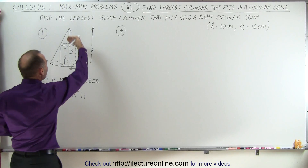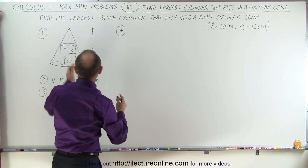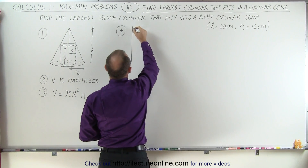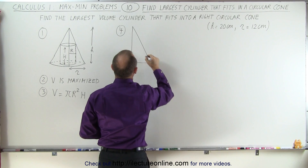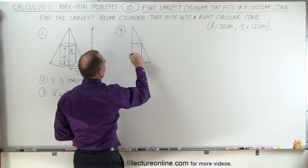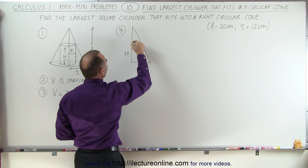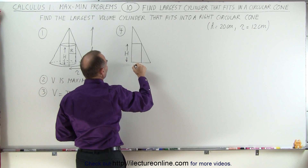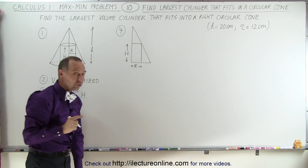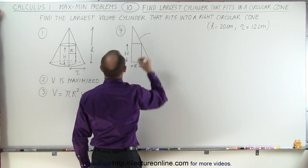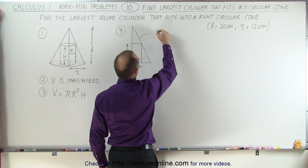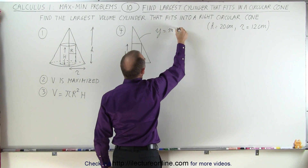If we take a cross section and look at just the right side of it, we get a cross section of the right circular cone and a cross section of the cylinder inside it. The height of the cylinder goes in the vertical direction and the radius in the horizontal direction. We can come up with an equation for the line that forms the edge of the right circular cone, thinking of it in terms of Y equals MX plus B.